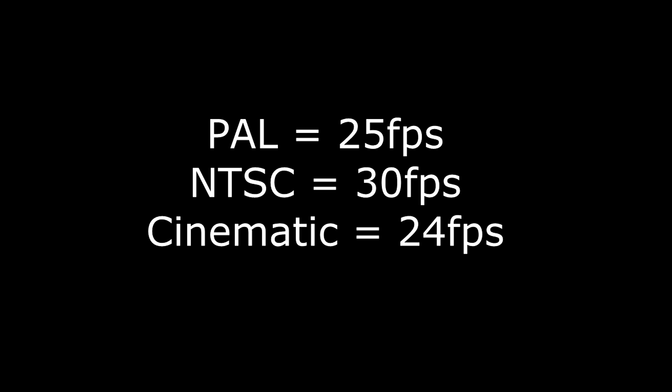The third thing to consider is at what frame rate you will be making the video. This will mostly relate to the frame rate that you have your editing software set to. In Australia, we use the standard PAL frame rate of 25 frames per second. In the US, the standard frame rate for NTSC is 30 frames per second. You could even use the cinematic rate of 24 frames per second, but I will just be focusing on the first two here.